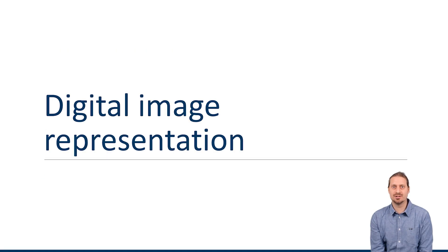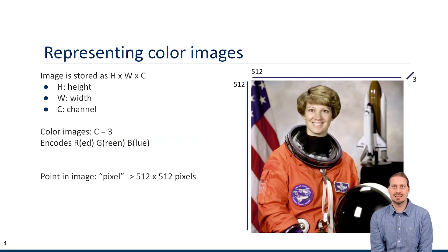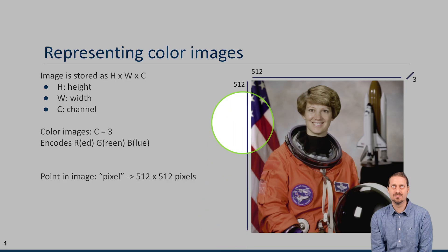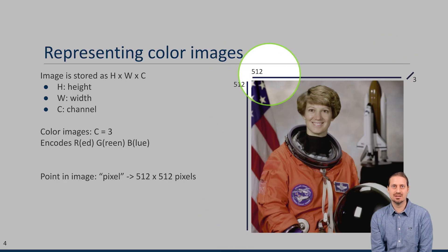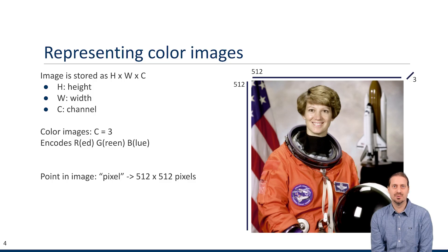Before we can talk about image analysis, we first need to discuss how images are represented by computers — digital image representation. Let's start with color images, the kind taken by your smartphone cameras. These images are represented as arrays with height and width dimensions. This gives us the size of the image; in the case of the one we see here, 512 by 512.